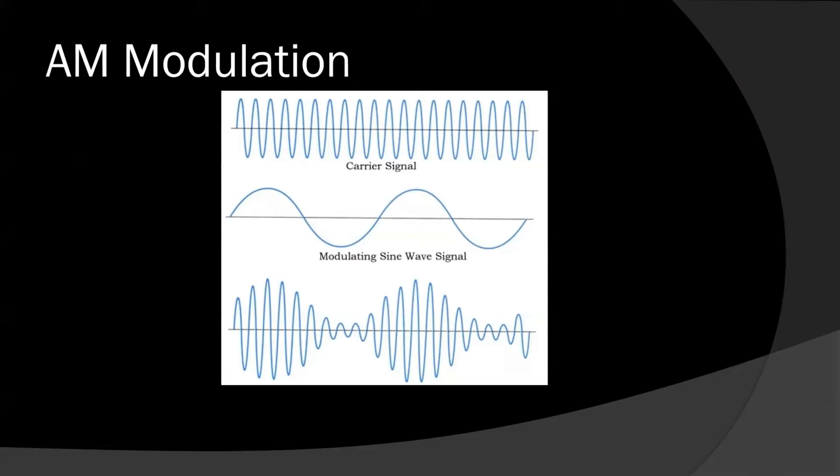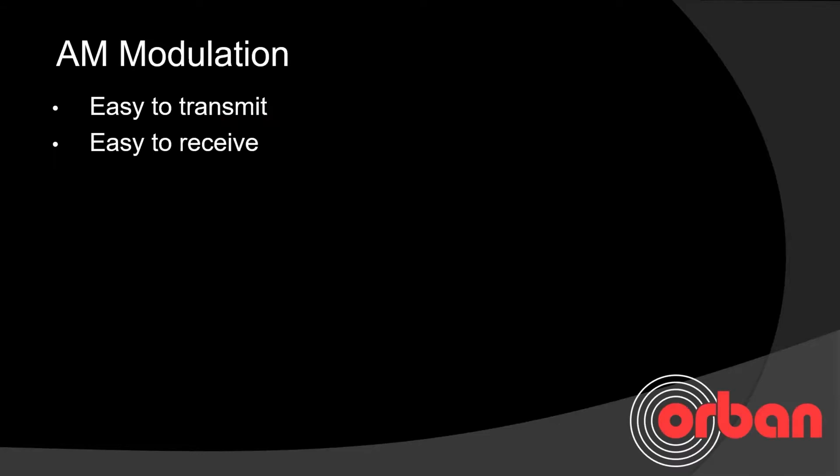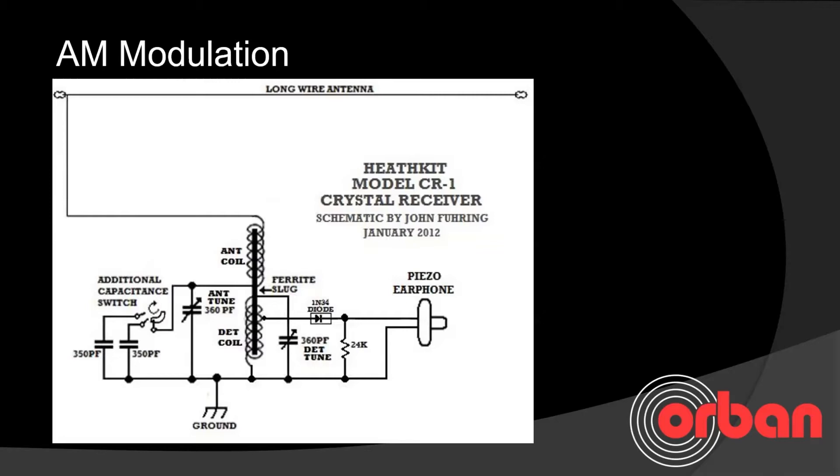We have a carrier signal and a modulating sine wave signal, and below that is the final result. AM modulation is very easy to transmit and easy to receive. In fact, you can build receivers with crystal radio sets, for those of you who are old enough to remember a crystal radio set.